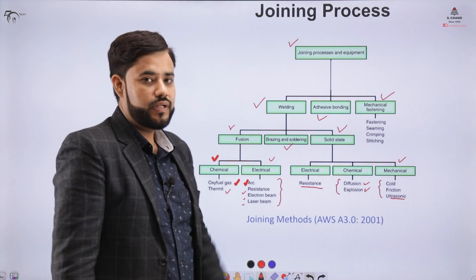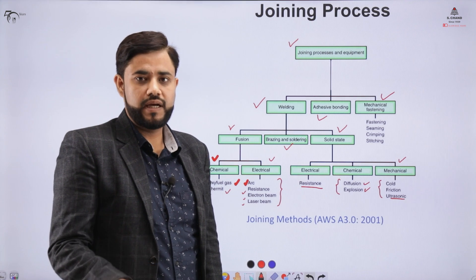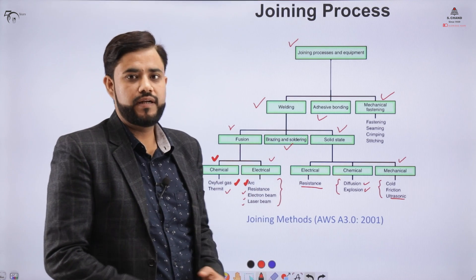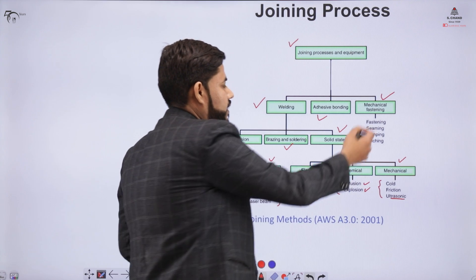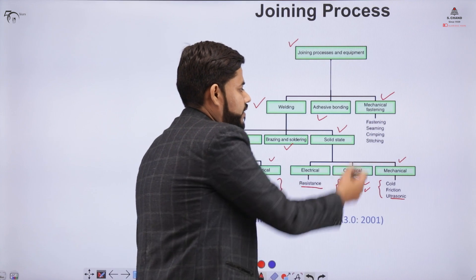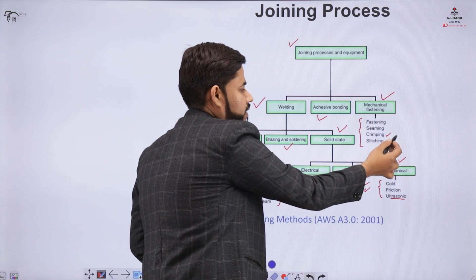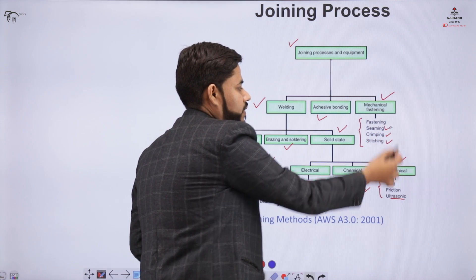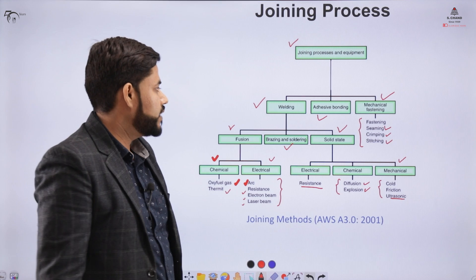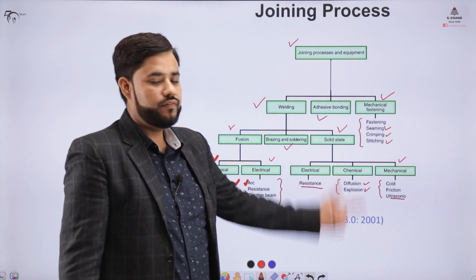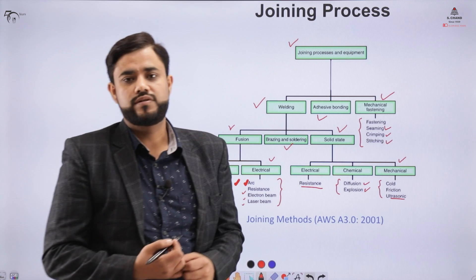For brazing and soldering, we have the concept of capillary action, which will be explained in the later part of the slides. For mechanical fastening, we can use fasteners or processes such as crimping, stitching, and seaming. For adhesive bonding, we can use adhesive gums to join components together.